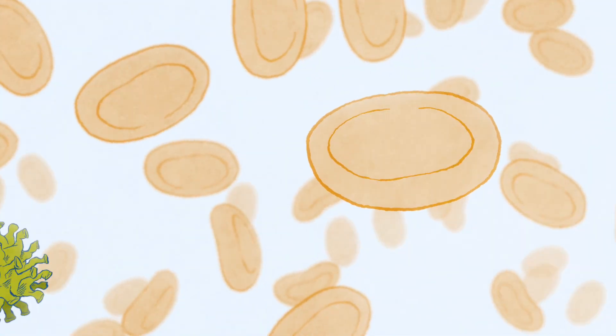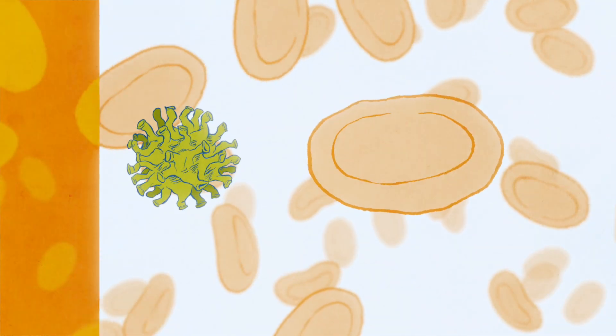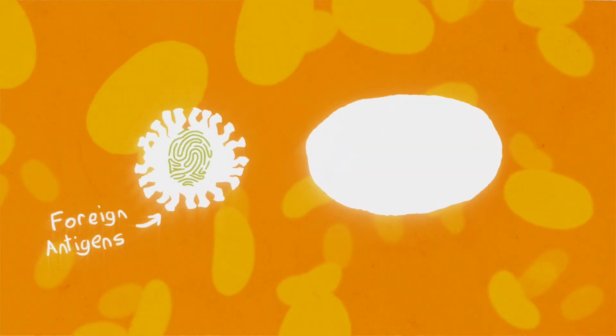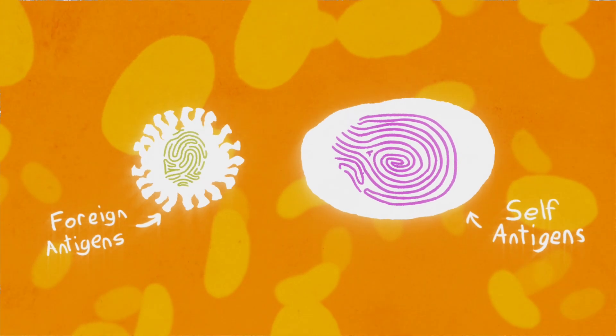Historically, vaccination worked well against infectious diseases, because the foreign proteins that make up the viruses and bacteria, called antigens, are easily distinguishable from cells that make up the human body.